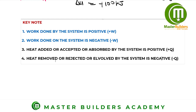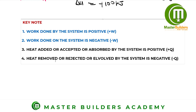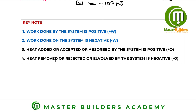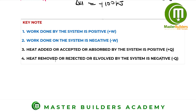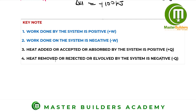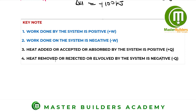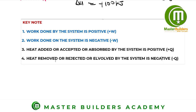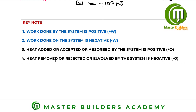In summary of these key notes: when work is done by the system, it is taken as positive; when work is done on the system, it is taken as negative; when heat is added to the system, it is positive; and when heat is removed, rejected, or lost by the system, it is taken as negative. Keep these rules clearly in mind to solve problems using the first law of thermodynamics.